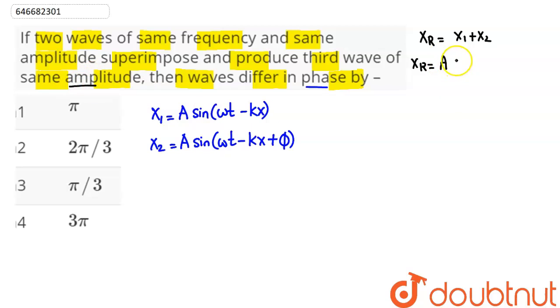This gives xᵣ = A sin(ωt - kx + θ), where θ is a phase constant.